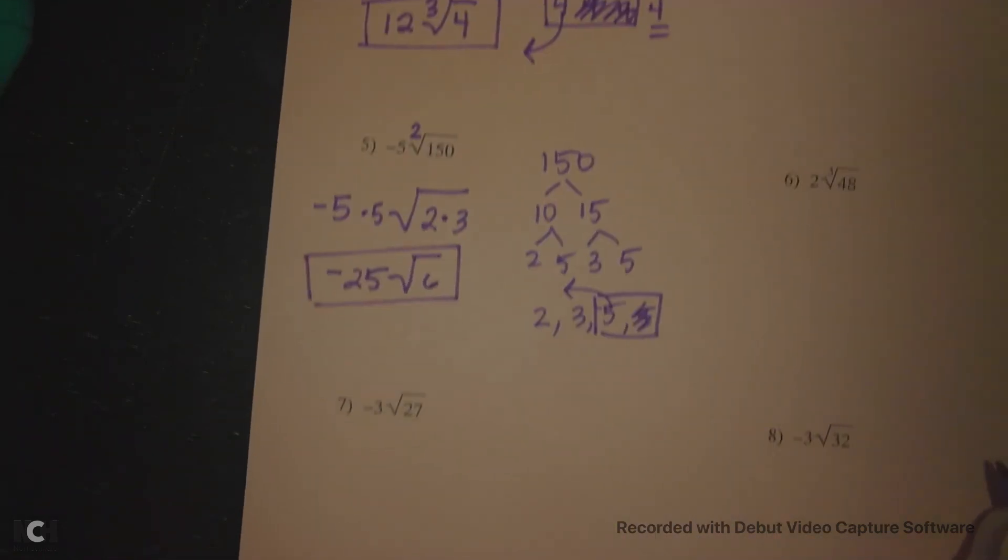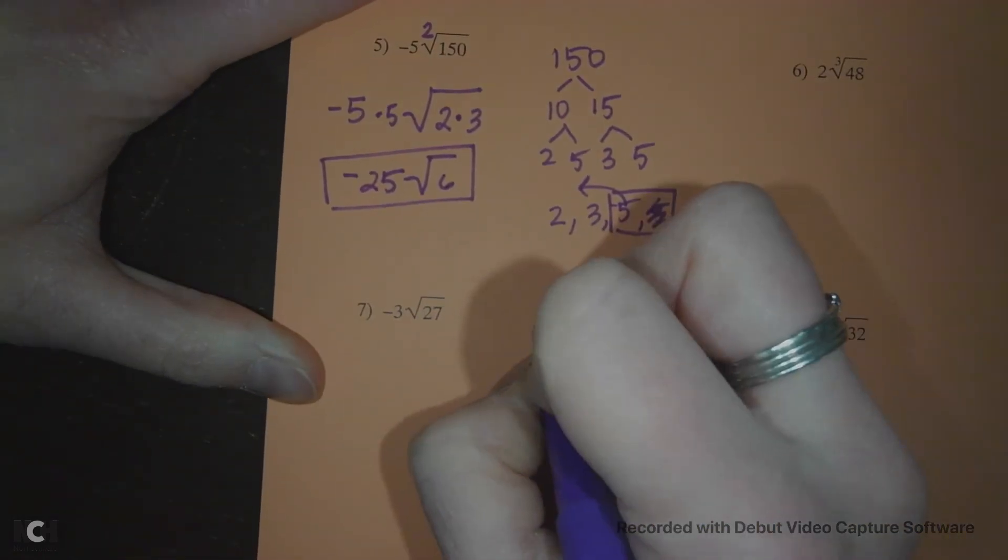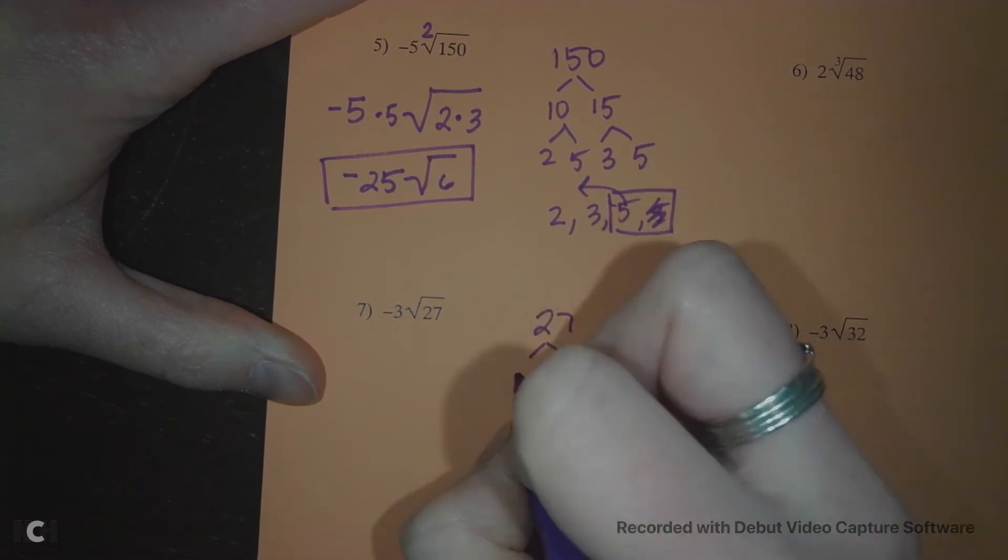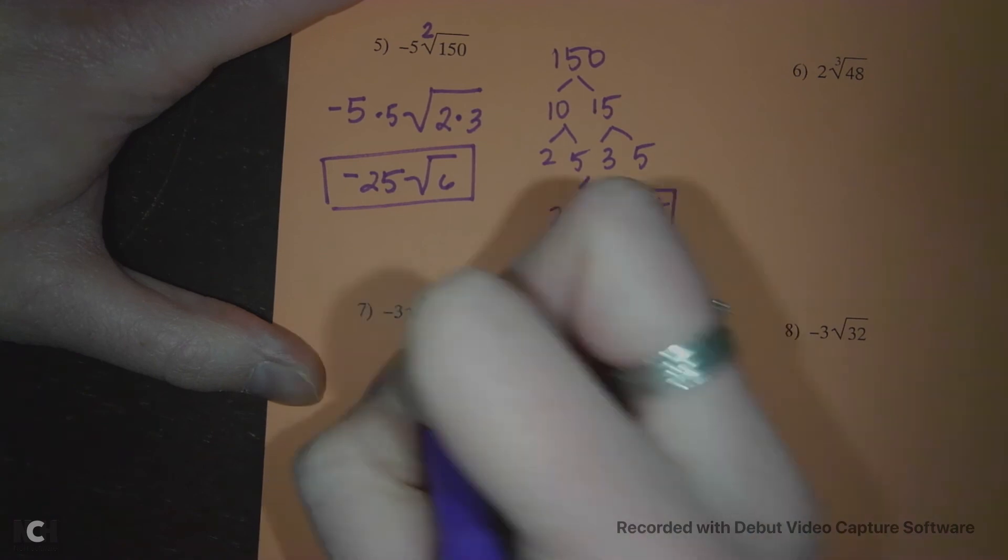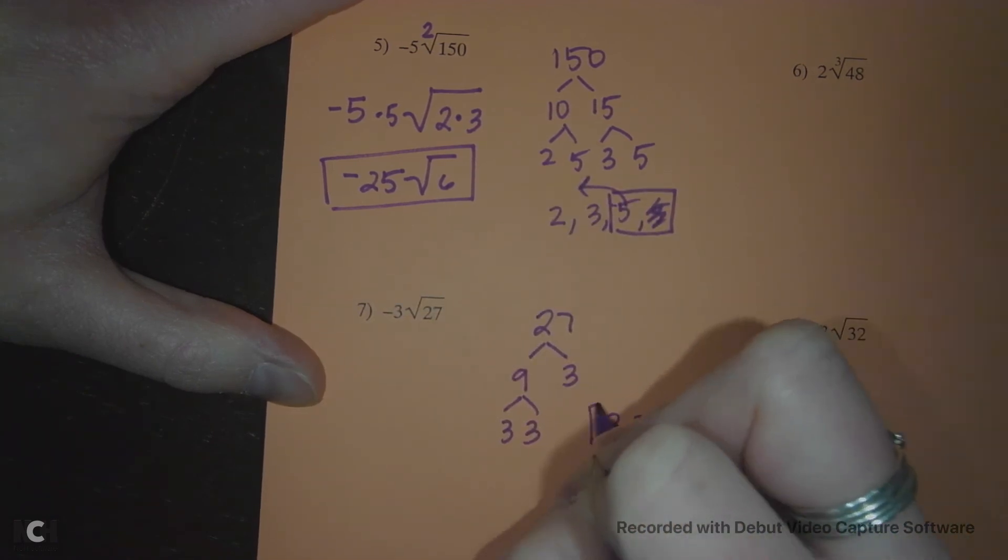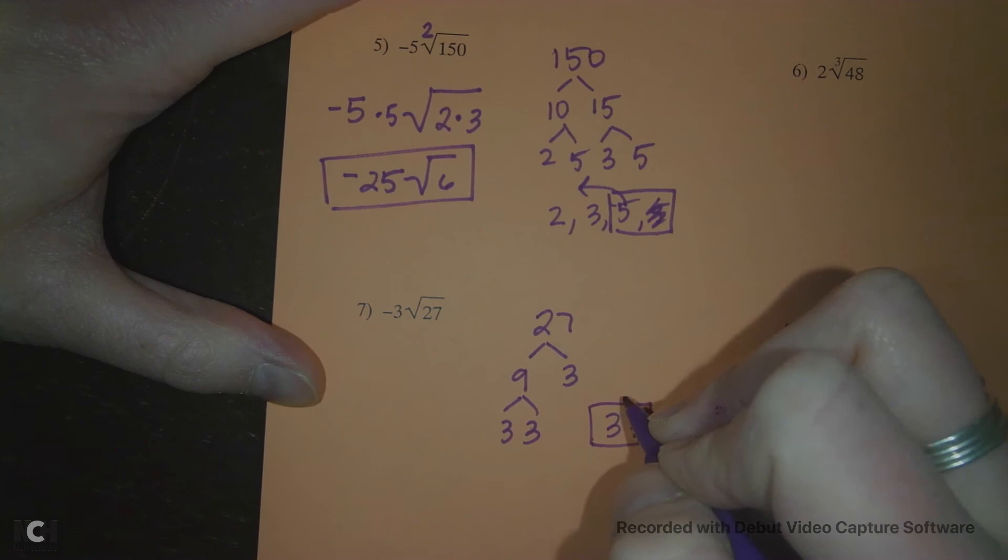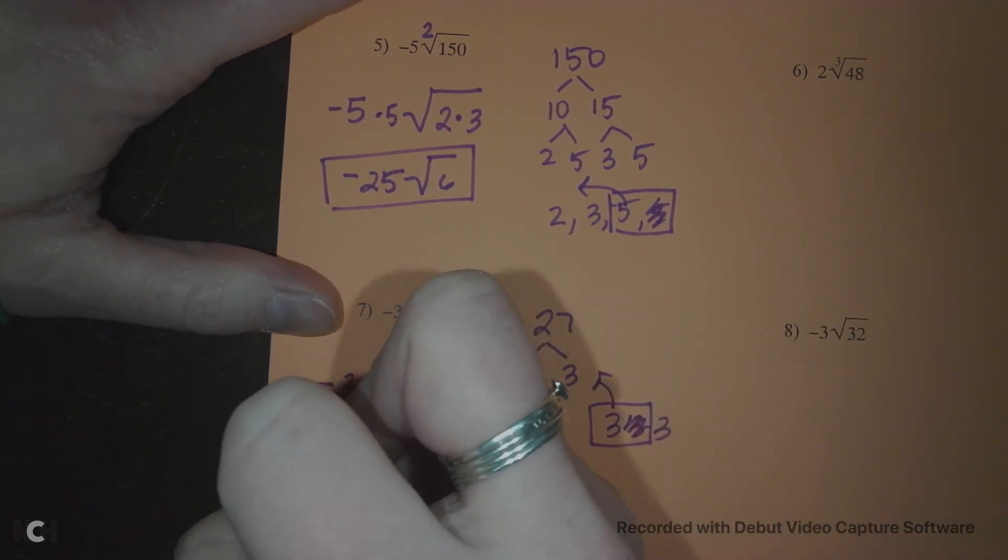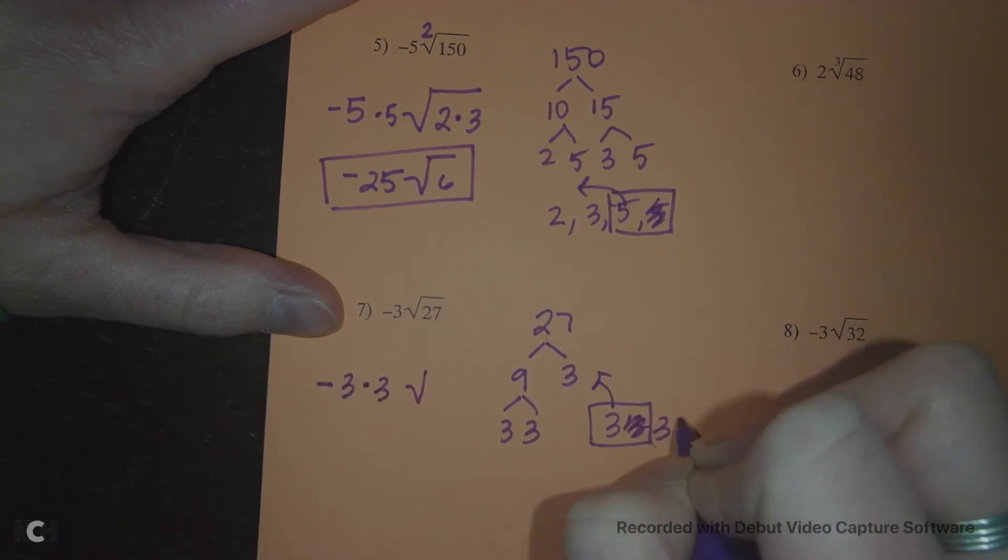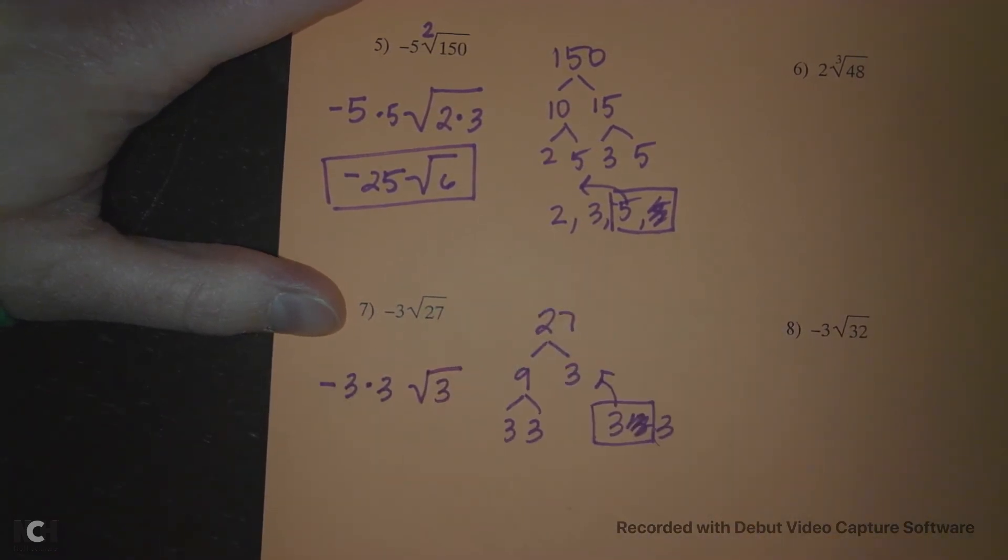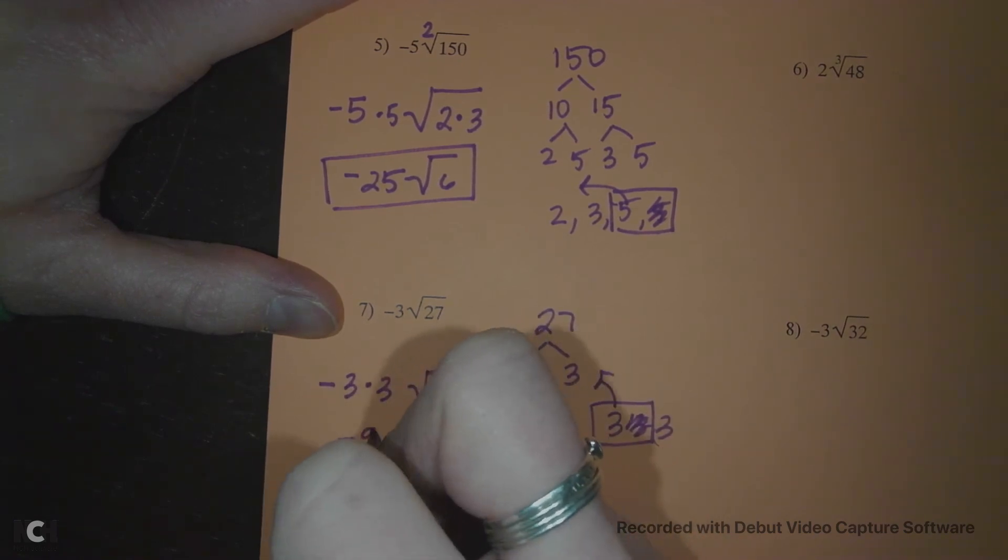Okay, another one, 27. So 27 reduces to 9 and 3, and 9 is 3 and 3. And we want a square root, so I've got three 3s. I just need a pair, one goes out and the other goes away. So I'm going to multiply my leading 3 by the one that escaped and keep underneath my 3 that got stuck trapped. Negative 3 times 3 is negative 9 root 3.